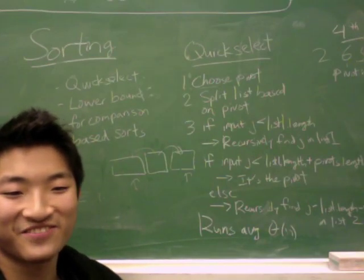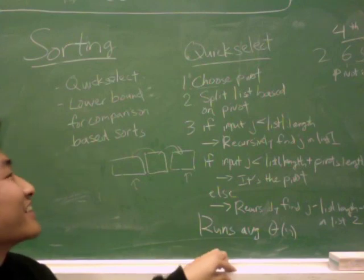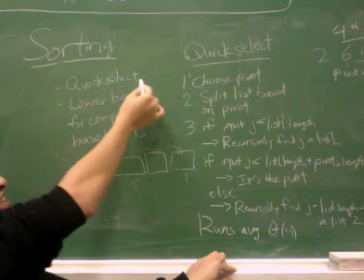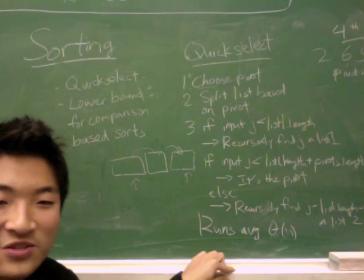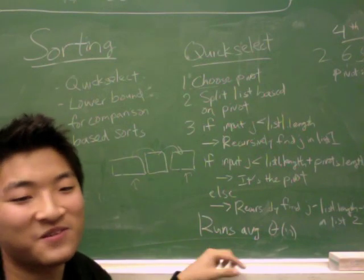Hi and welcome to Data Structures in 5 Minutes. Today I'll be concluding my sorting unit with a discussion on QuickSelect and then a lower bound for comparison-based sorting algorithms. This discussion will wrap up this unit really nicely.